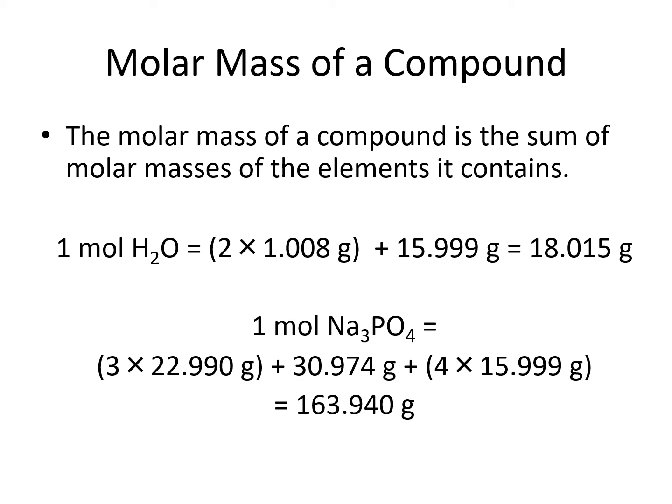To calculate the molar mass of a compound, we would add up the masses of all the elements within the compound. For example, to find the mass of water, we would add 2 times the mass of hydrogen from the periodic table, plus 1 times the mass of oxygen from the periodic table.